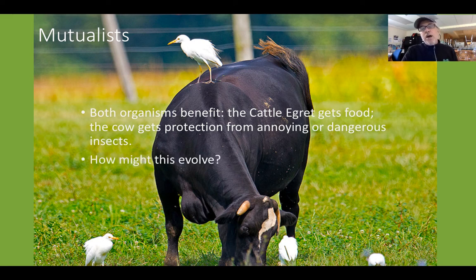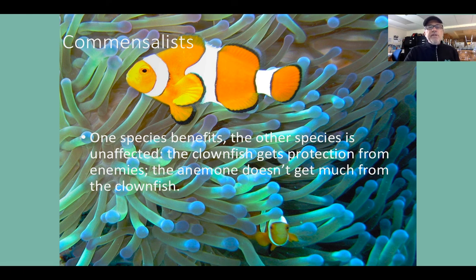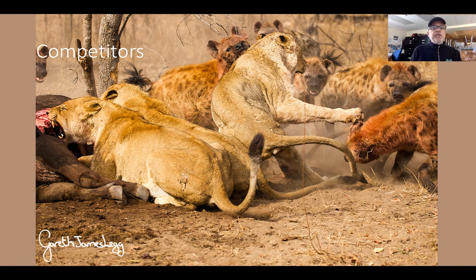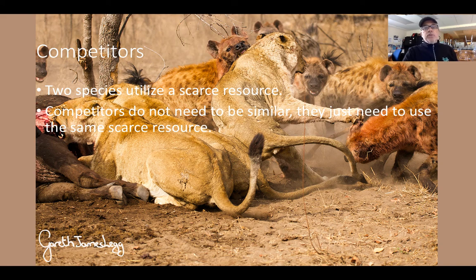An interesting question: how would a mutualistic relationship like that evolve? Here are commensalists: Nemo and his dad Marvin — the clownfish gets protection from its enemies in the anemone, while the anemone doesn't gain much. If you could prove the clownfish's food also feeds the anemone, you would show it's a mutualism. Finally, competitors: these lions and hyenas are competing over a water buffalo kill. Two species utilizing a scarce resource. Competitors don't need to compete over food — they could compete over nest sites, water, minerals in the soil, habitat surfaces, like barnacles, mussels, and clams. Competitors just need to use the same scarce resource.